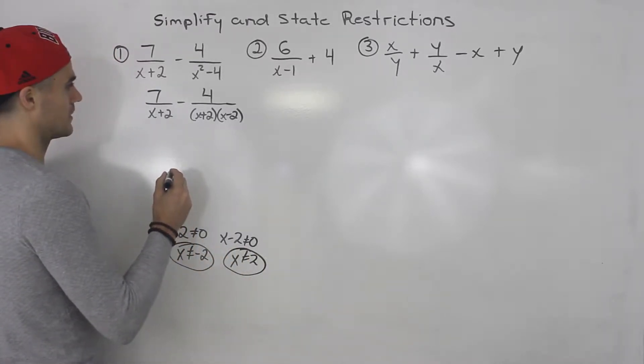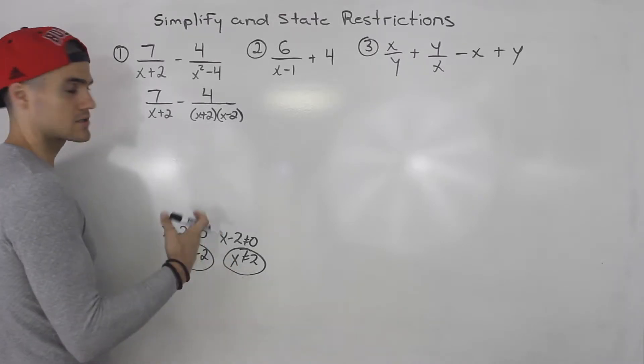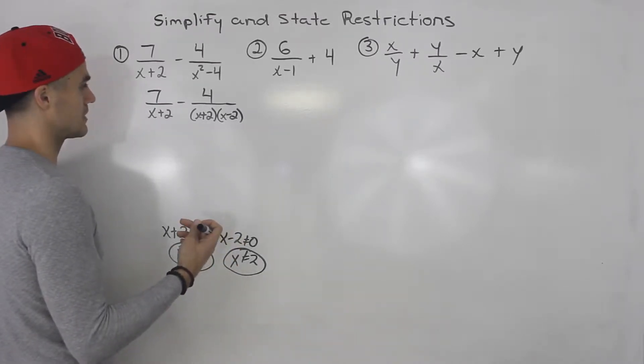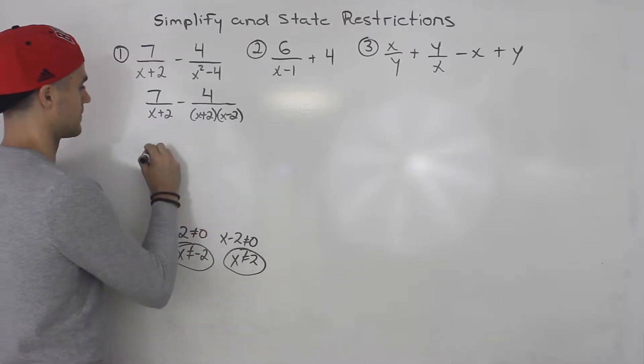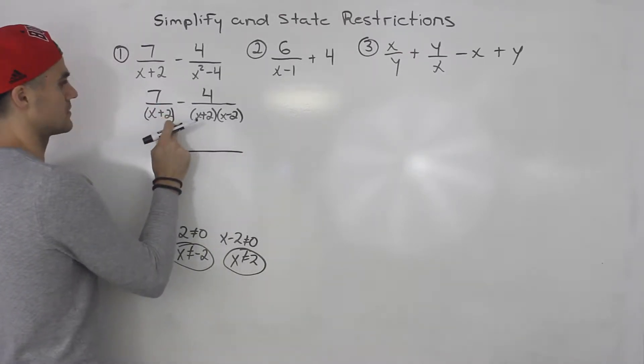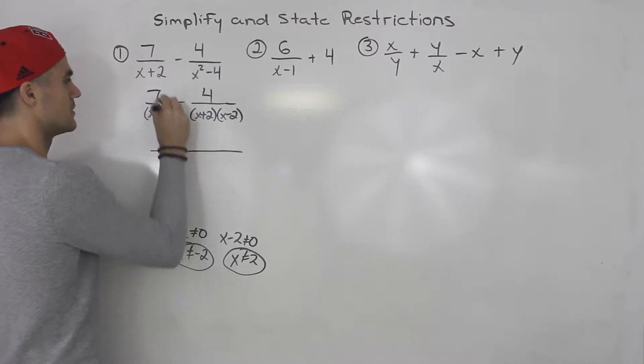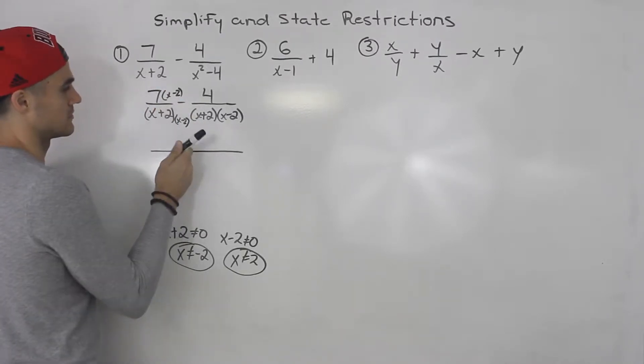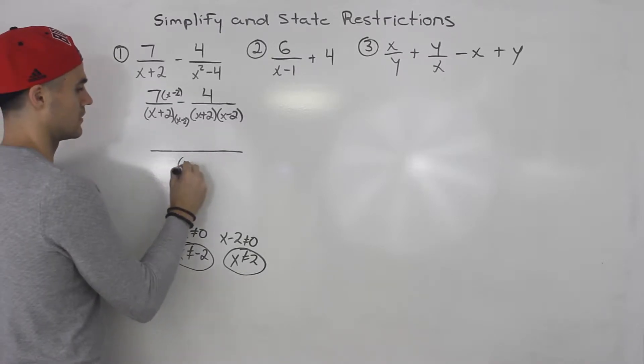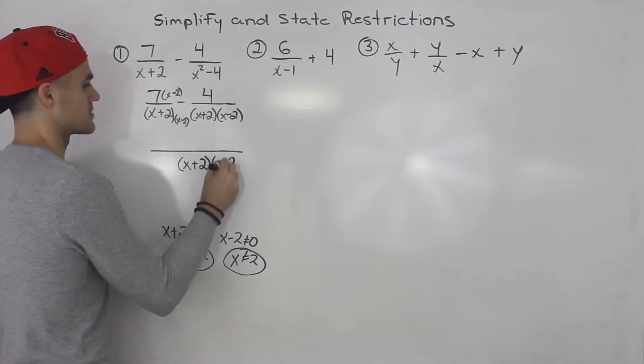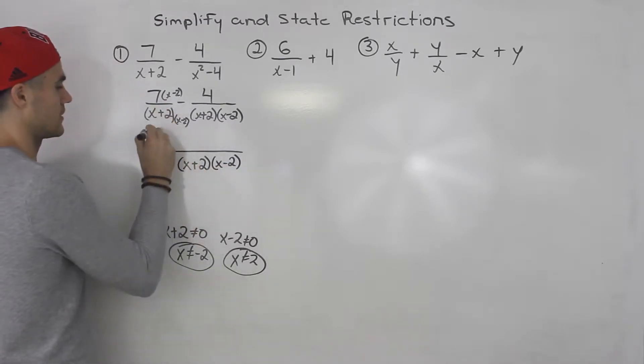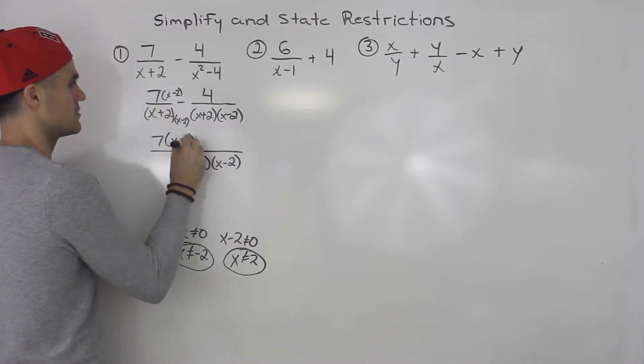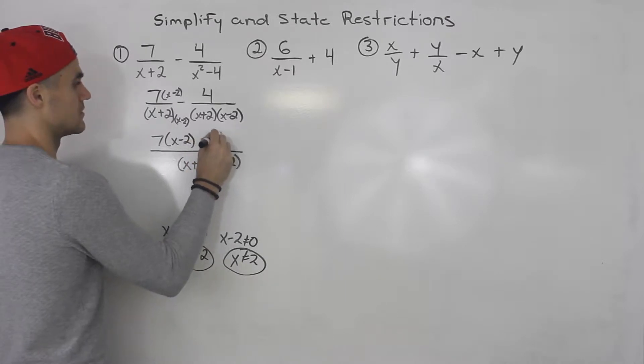So now that we have the restrictions, we've got to simplify. What is the common denominator going to be? Well notice that x plus 2 is in both of these. But here we have x minus 2 and here we don't. So we can multiply this by x minus 2 and then the top by x minus 2. The lowest common denominator is x plus 2 times x minus 2. And here we'll have 7 bracket x minus 2 minus 4.